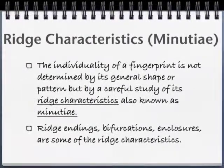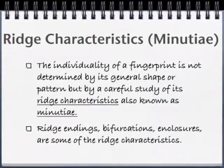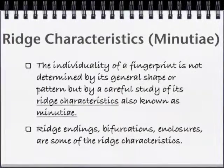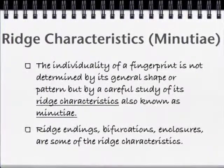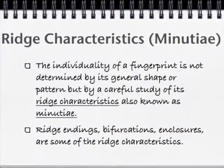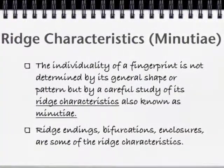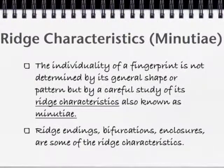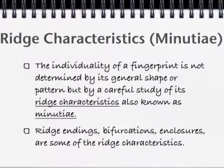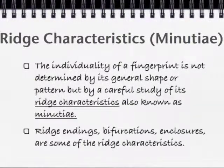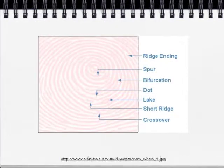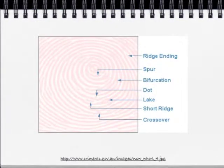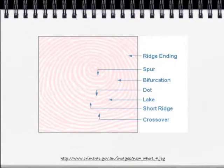Ridge characteristics, or minutiae — the individuality of a fingerprint is determined by the ridge characteristics. They are called ridge endings, bifurcation, enclosures, and some of the other ridge characteristics. We will do a lot of this in lab. This next slide shows some of the different ridge characteristics or minutiae.